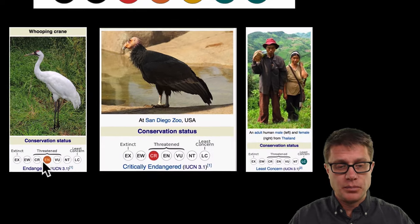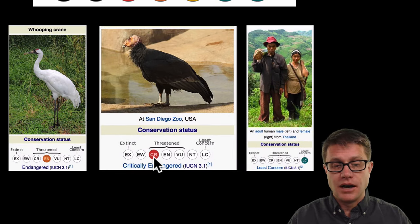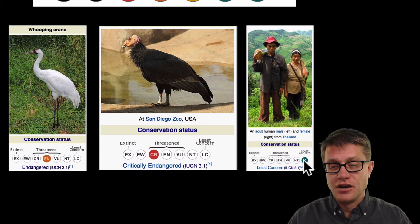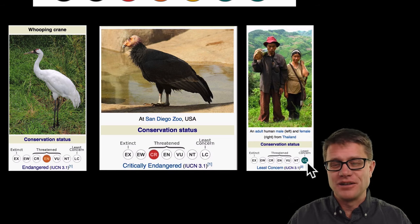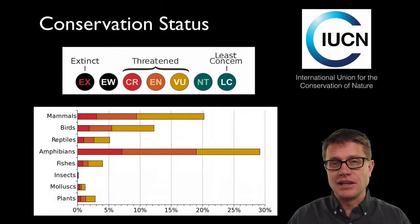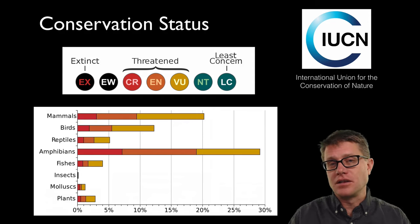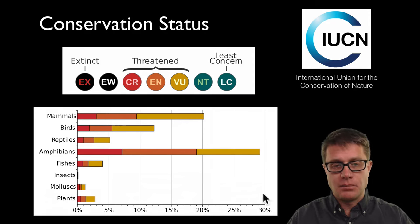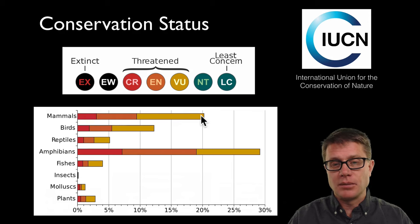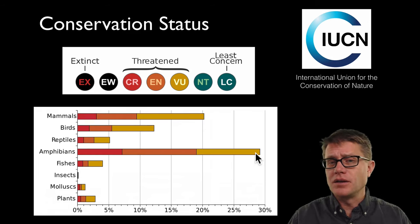For example, the whooping crane is Endangered. The California condor is Critically Endangered. Humans, you can imagine, are Least Concern. They have then created this Red List, where we look at how many species fall into these threatened or red categories. If we look at mammals, almost over 20% are in this threatened area. And amphibians are really at risk.